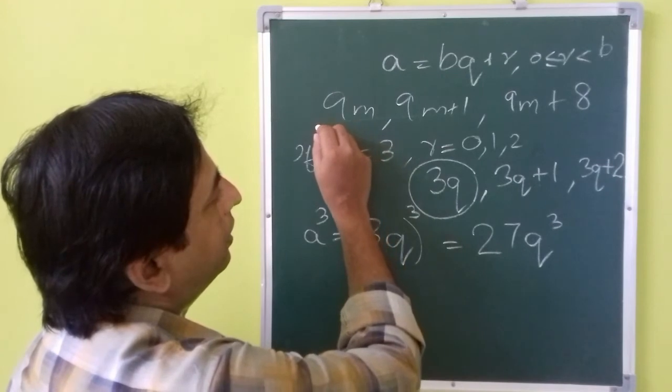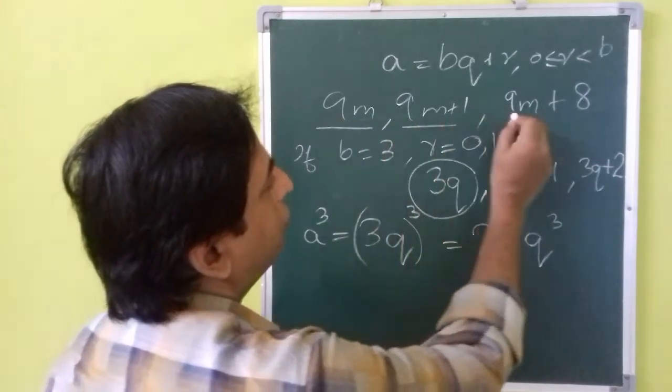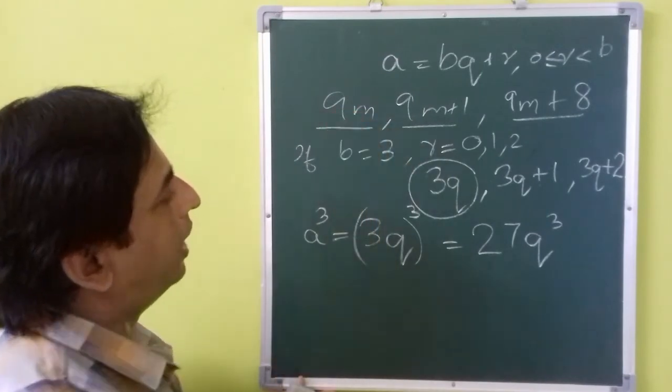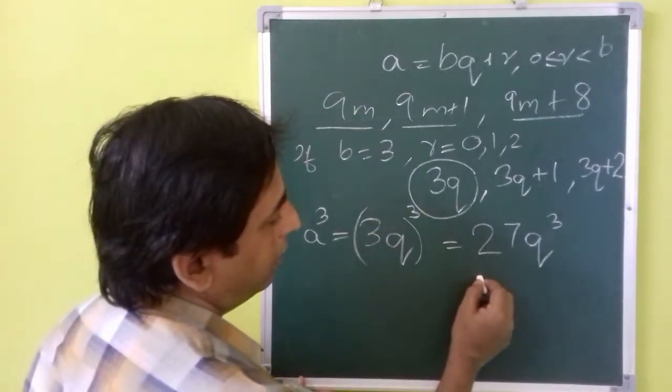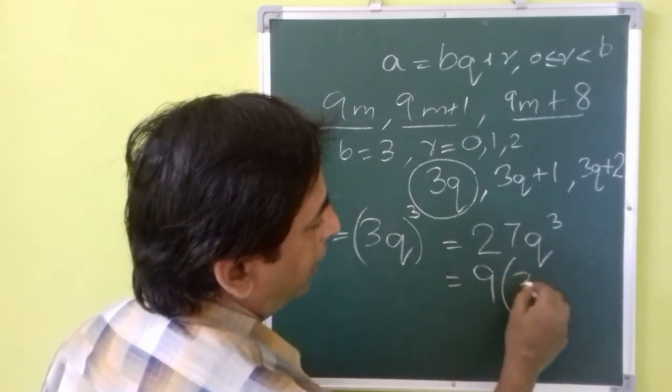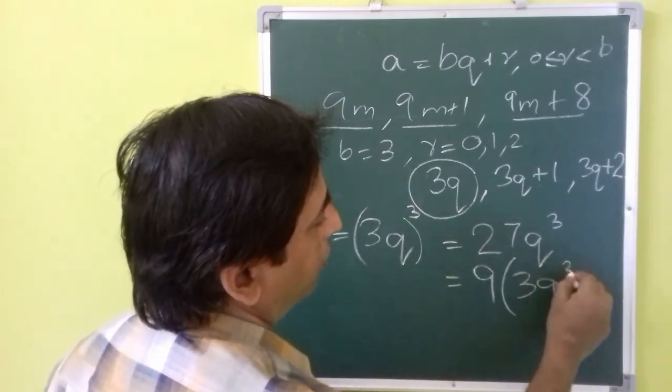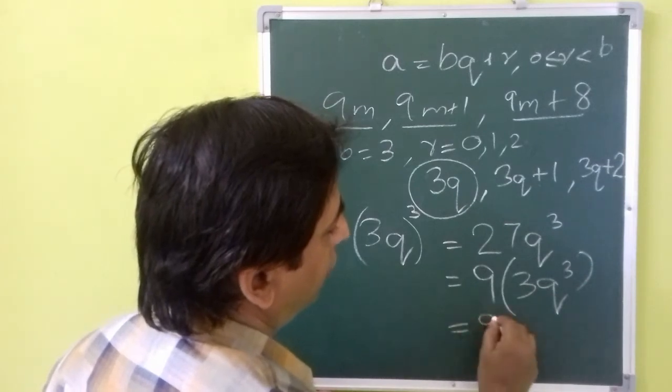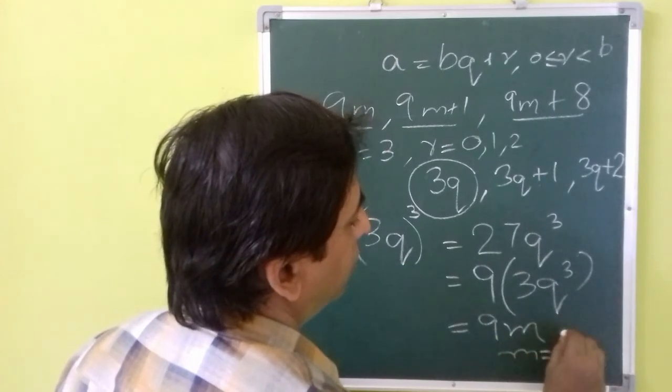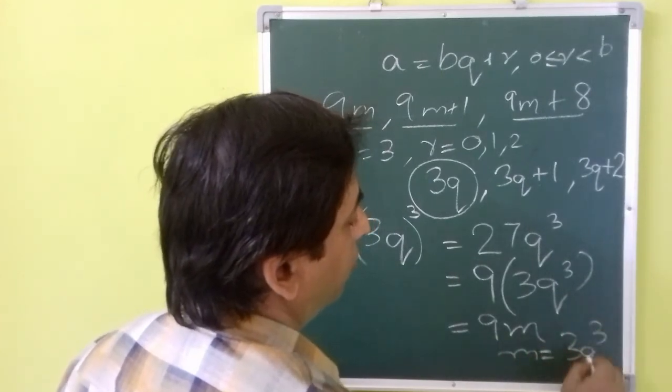Then how can you get it in any of this form? So here we can directly take it in the form of 9m, because we can easily take 9 out from this, which will be 9 into 3q cube. That means this is in the form of 9m, where m is equal to 3q cube.